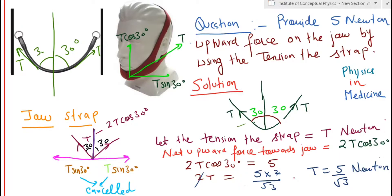So upward component of the tension is 2T cos 30. And if you see, there is another component of the tension, which is T sine 30 on both sides, but the T sine 30 component is in fact getting canceled and makes no difference.